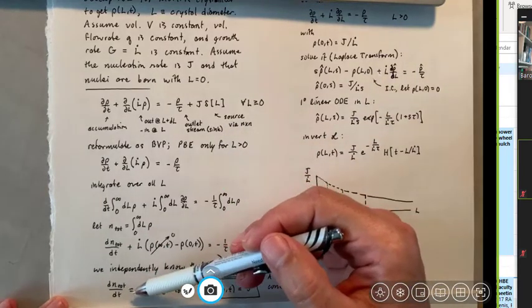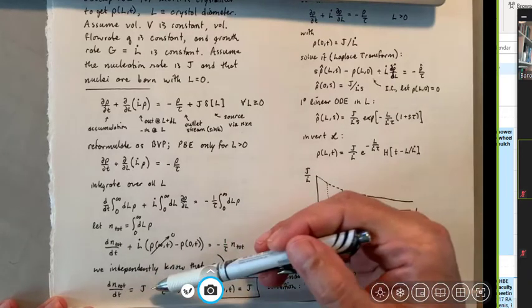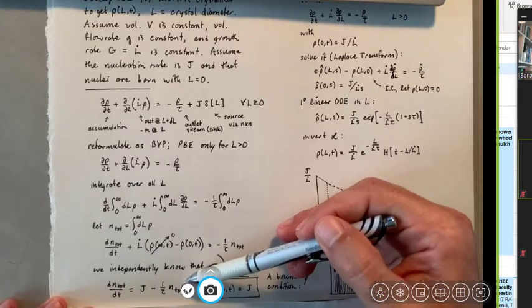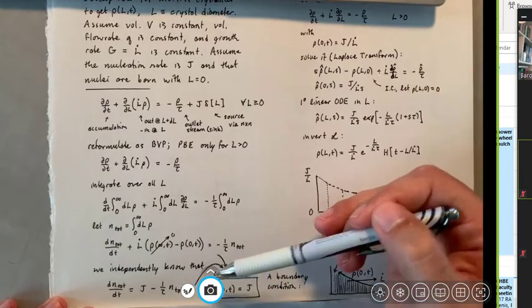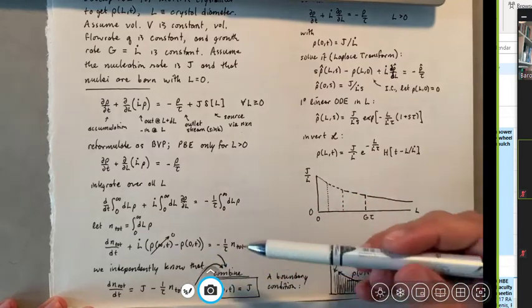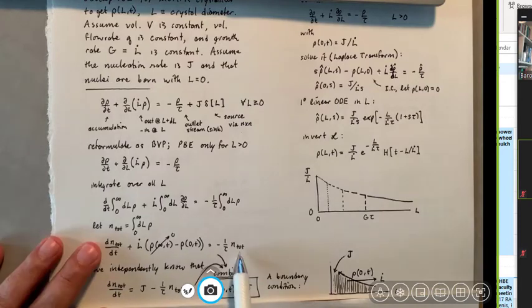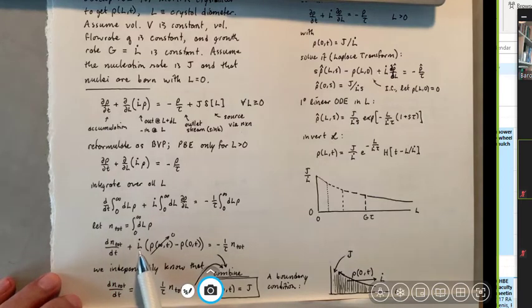What we're going to do now is to combine this with something else that we independently know. We already know that the total number of nuclei in the crystallizer changes because of nucleation events that are giving birth to nuclei. And it also changes because crystals are flowing out through the outlet stream. So if this is the concentration of crystals total, then I multiply by one over tau, and I get the rate at which crystals are exiting this reactor on a per volume basis. And now I can recognize that this term in here, the leftmost and rightmost terms are exactly the same as these. And if this is true, and this is also true, then J must be exactly equal to L dot times rho of zero times T.